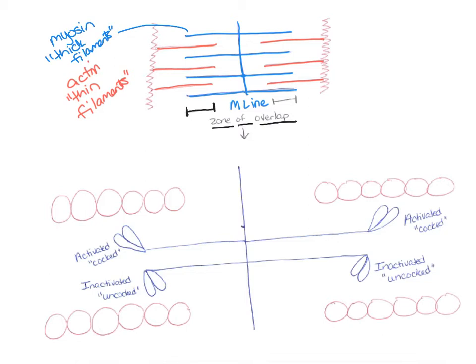The thin filaments end at the Z line. The myosin molecules have heads on them, and those heads are going to bind to the thin filaments and pull that thin filament towards the center of the sarcomere. When they pull towards the center, the zone of overlap gets much bigger as the thin filament gets pulled closer on each side. Our zone of overlap gets really much bigger and the whole sarcomere shortens.